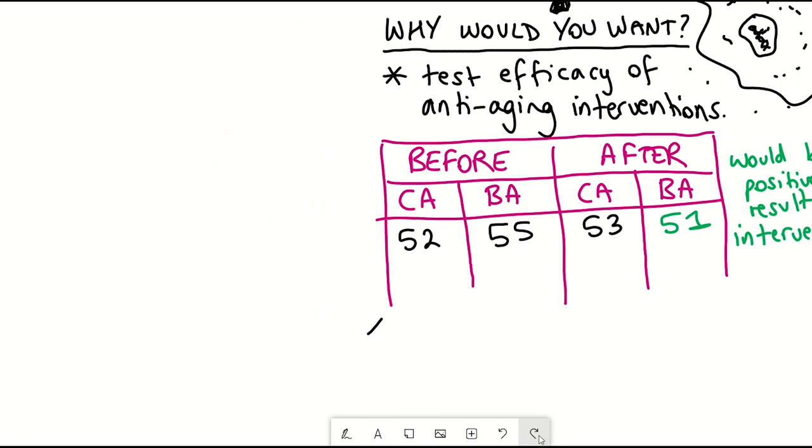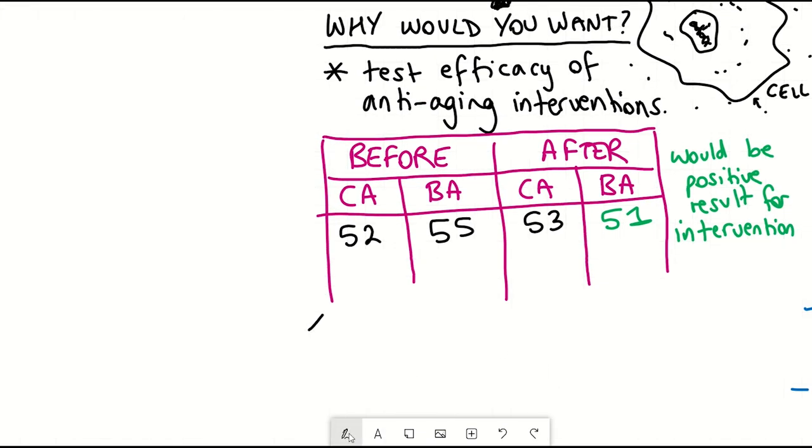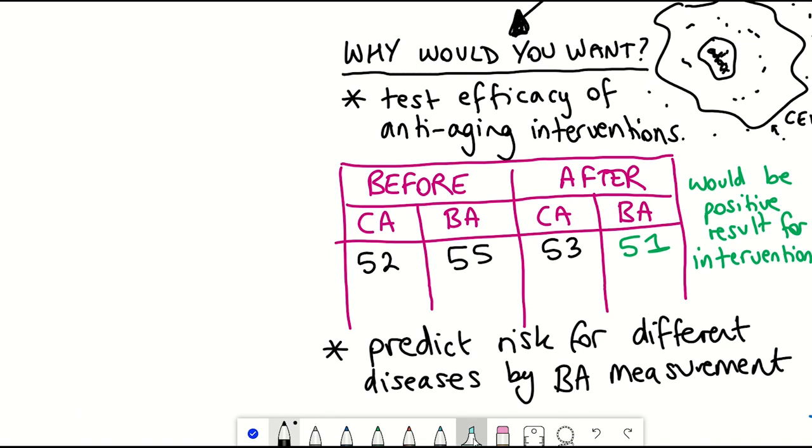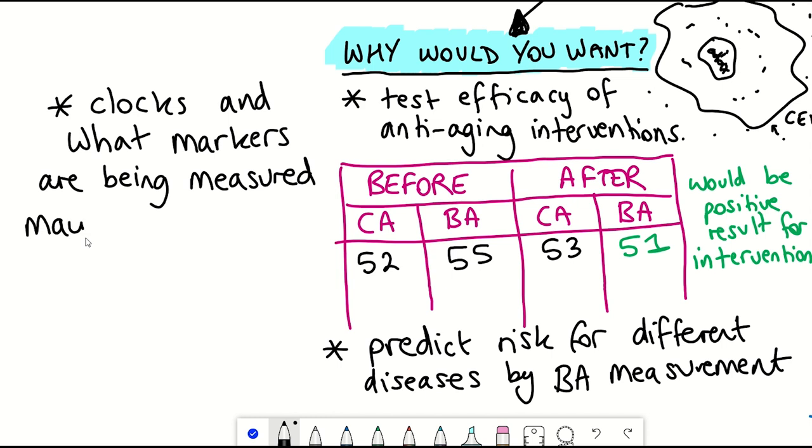So aging clocks have the potential to help evaluate different anti-aging interventions but they could also be useful to get a biological age of someone. So an inferred chronological age which could therefore be used to predict the risk of different diseases. Sort of an early prediction. And the clocks themselves may also elucidate on the actual underpinning aging mechanism which could highlight further areas of interest and future study.